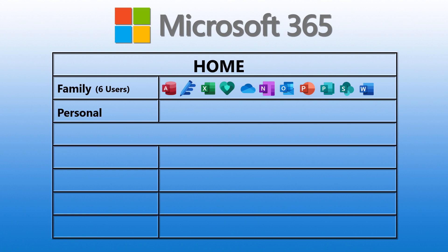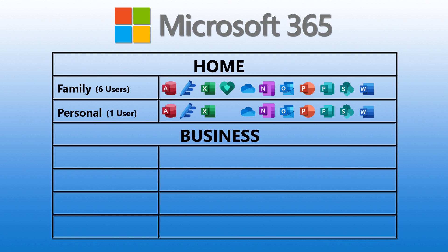Then we have Microsoft 365 Personal, which includes Access, Editor, Excel, OneDrive, OneNote, Outlook, PowerPoint, SharePoint, Publisher, and Word — but this is only good for one user. On the business side, there is Microsoft 365 Business Basic, which includes Exchange, OneDrive, SharePoint, and Teams.